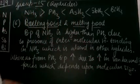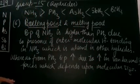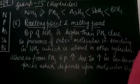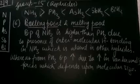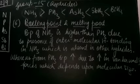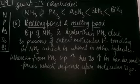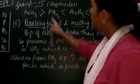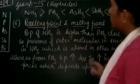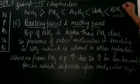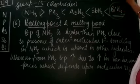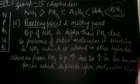From phosphine onward, the boiling point increases due to the increase in van der Waals forces, which depend on molecular size. So the boiling point of ammonia is higher than phosphine, but bismuthane has the maximum boiling point overall. The melting points of these hydrides also show the same trend.